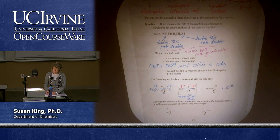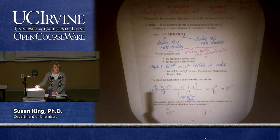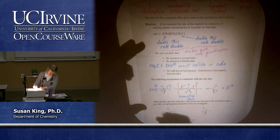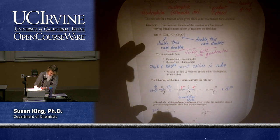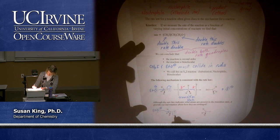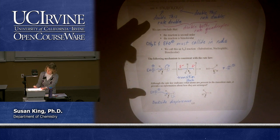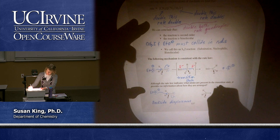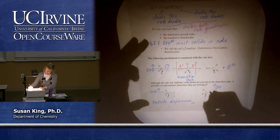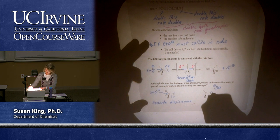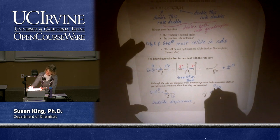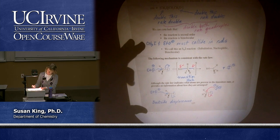Although the rate law indicates what atoms are present in the transition state, it provides no information about how they are arranged. For example, I had the ethoxide coming in from the opposite side of the leaving group — we have a name for this: it's called backside displacement. Alternatively, the ethoxide ion could come in from the same side — that would be front-side displacement. We're going to have to do some experiments to find out which way this is actually happening.